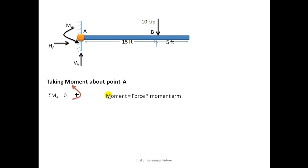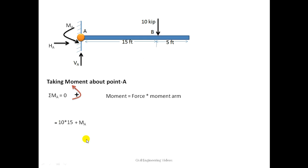Moment is equal to force into moment arm. Here 10 into 15: 10 is the point load force and 15 is the moment arm of this force about point A — the vertical distance between the point of application of the force and point A. This point load creates a clockwise moment about point A, so it is taken as negative.